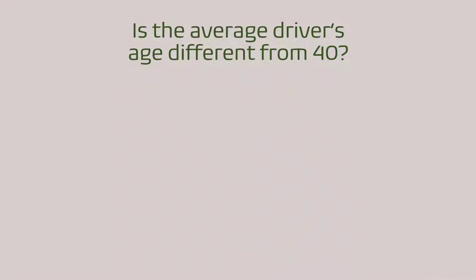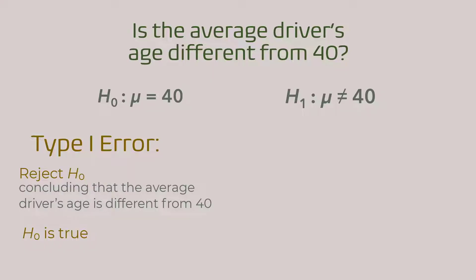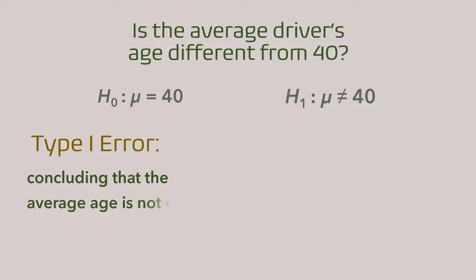Consider this research question: is the average driver's age different from 40? The null hypothesis here would be that the mean is 40, and the alternative would be that the mean is not 40. The type 1 error here would be rejecting a true null hypothesis — concluding that the average driver's age is significantly different from 40, when in fact the average age is indeed 40.